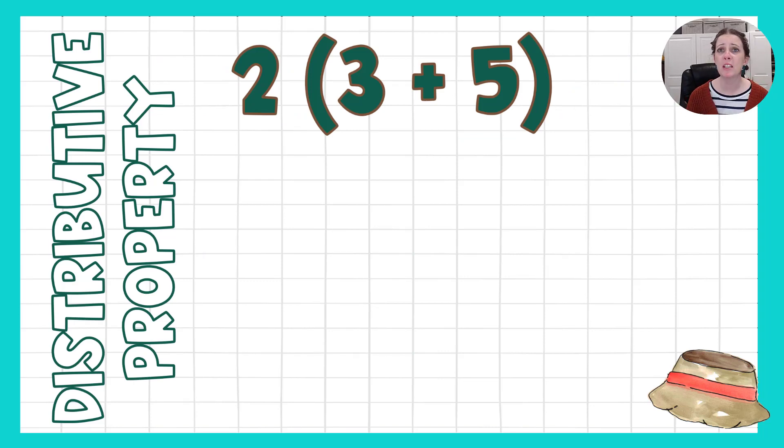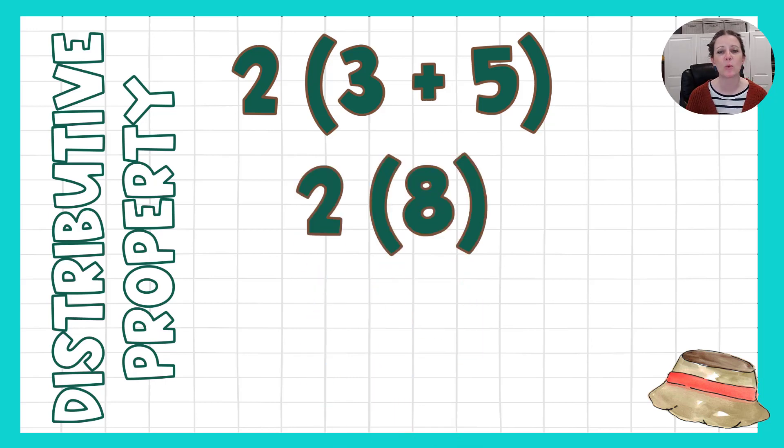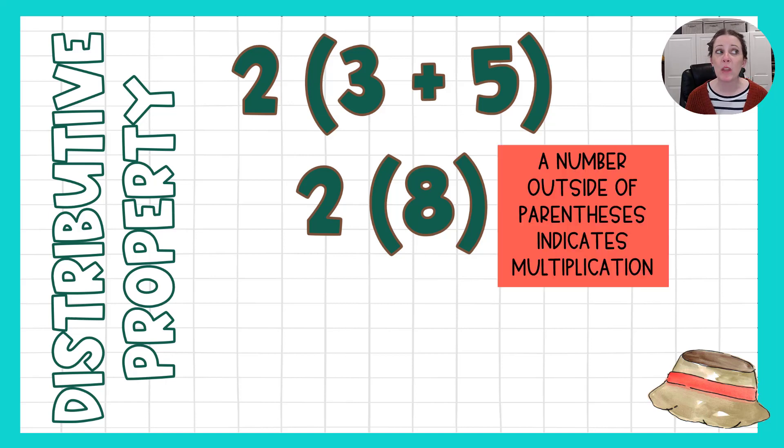So here's what we have, that we're going to work with today. Here's an expression, we've got 2 times 3 plus 5. There are multiple ways we could go about simplifying this expression. We could follow our order of operations and add what is in our parentheses first, and so we know that 3 plus 5 is 8, and so we could say 2 times 8, and that we know from previous experiences means that we're going to multiply. Anytime a number and parentheses touch like that, we're going to multiply. 2 times 8 is 16.